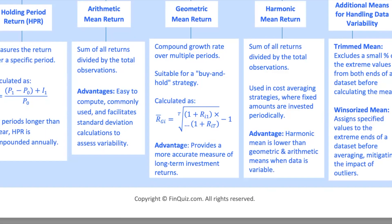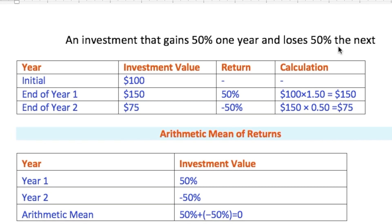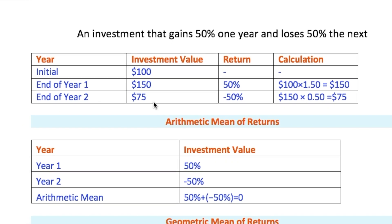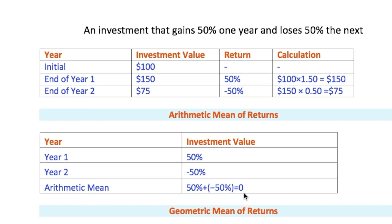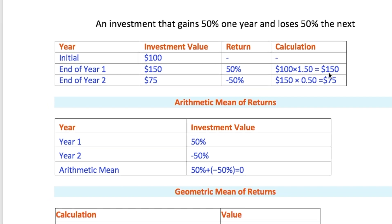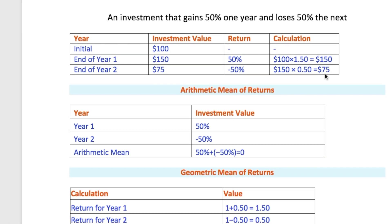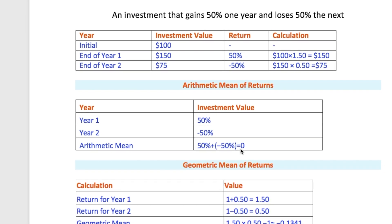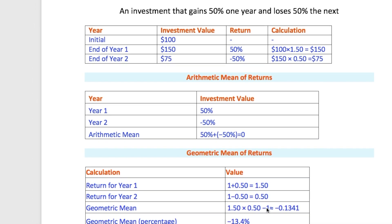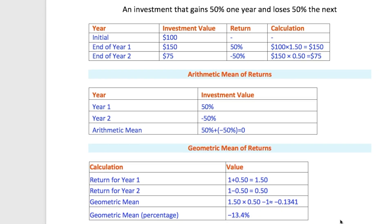Let me give you an example to make this clear. Imagine you have an investment that gains 50% one year and loses 50% the next. If you look at the arithmetic mean, you might think your average return is zero, so you haven't lost anything. But let's dig deeper. Suppose you start with $1,100. A 50% gain in the first year boosts your investment to $1,150, but a 50% loss in the second year cuts it down to $575. So even though the arithmetic mean is zero, you've actually lost money. The geometric mean considers how each period's return compounds, reflecting the real growth rate over time.